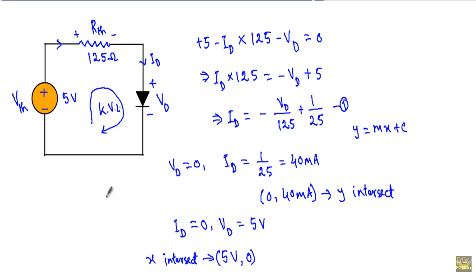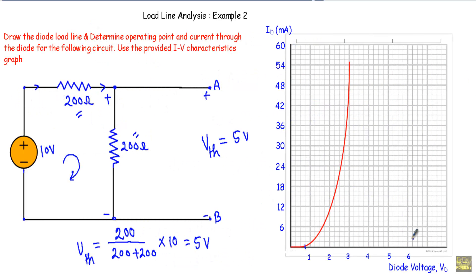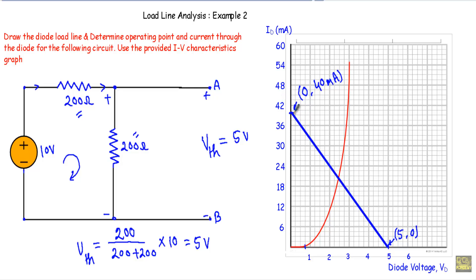To draw a straight line we need at least two points. I have the Y-intercept at (0, 40 mA) and the X-intercept at (5 V, 0). Connecting these two points on the IV characteristics graph gives us the DC load line. The load line and the IV curve intersect at the operating point.